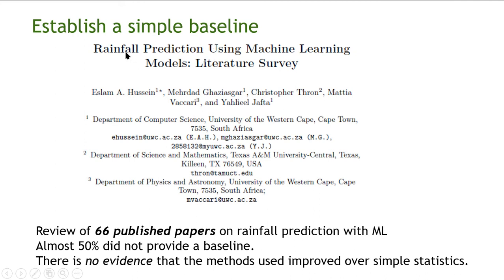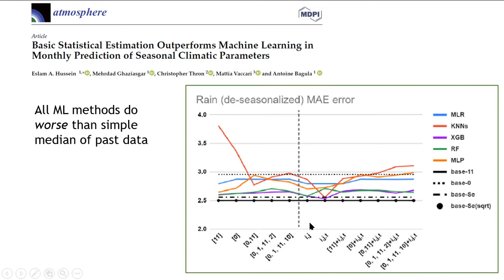Establish a simple baseline. In a survey of rainfall prediction, out of 66 papers, 50% did not provide a baseline, meaning their method may have been no improvement over a simple average. In fact, in our own rainfall prediction study using seasonal image data for monthly rainfall prediction, all the machine learning methods we tried performed worse than a simple median of past data. Don't jump to machine learning and assume it's doing better.